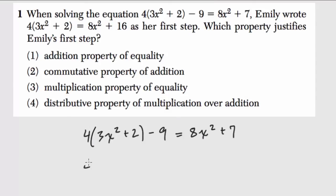Then in the second step, on the left-hand side here, it looks like we still have 4 times 3x squared plus 2, close parentheses. I notice there's no longer a negative 9 there. I'll leave that space blank.